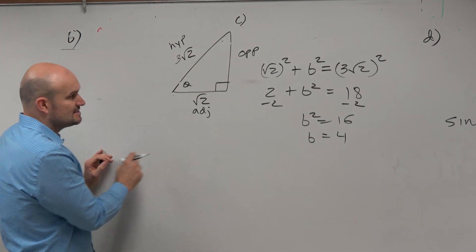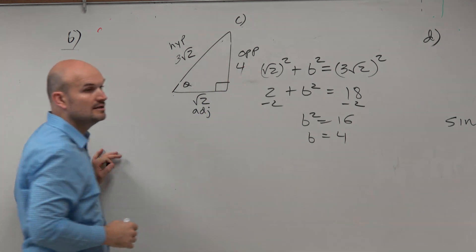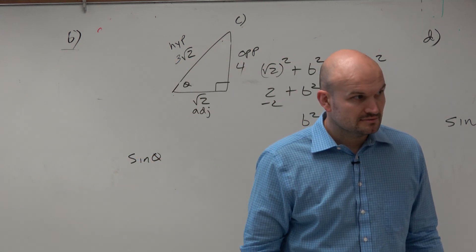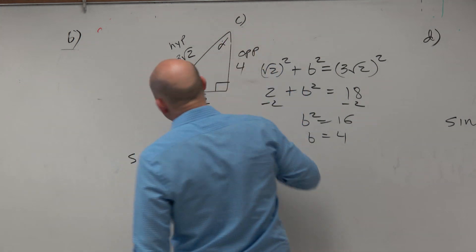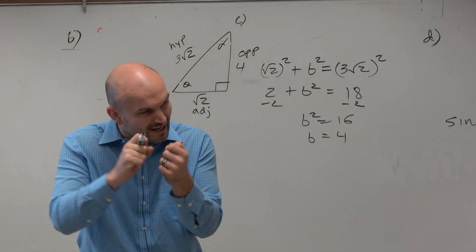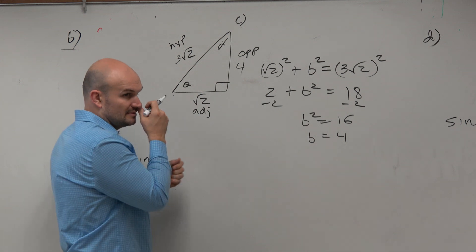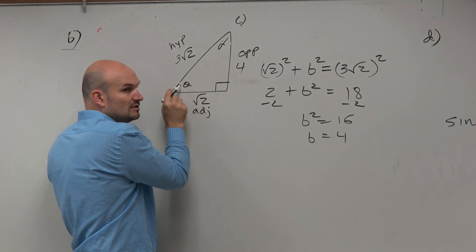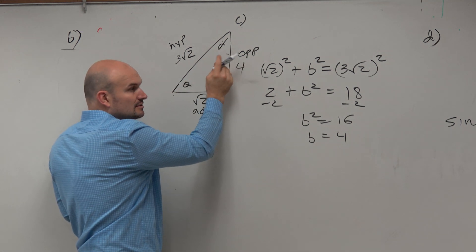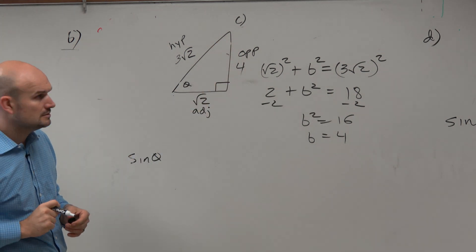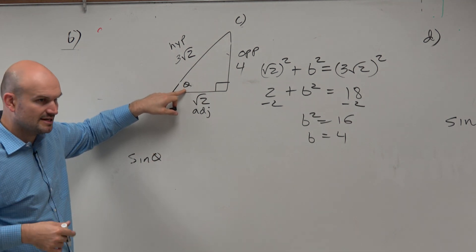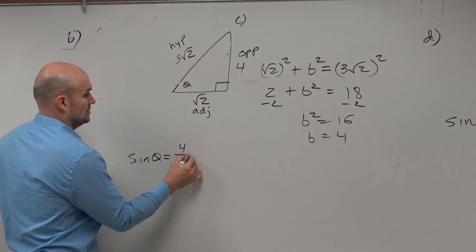Now that we have our side lengths, let's compare them. We're going to say sine of alpha or theta — it's very important, because what if alpha is up there? The sine of alpha is different than the sine of theta. That's why it's very important that you know what angle you're referring to. These are not the same angles. This is the adjacent side to that angle, this is the opposite side to that angle. I was just doing a little over-teach. So sine here is opposite over hypotenuse.